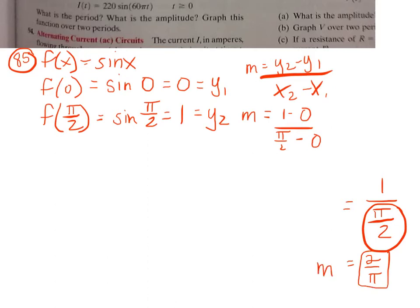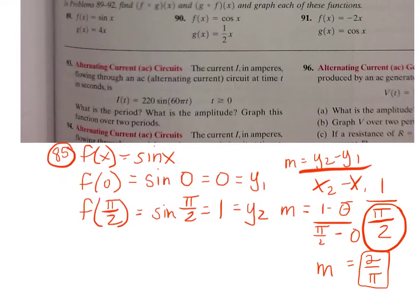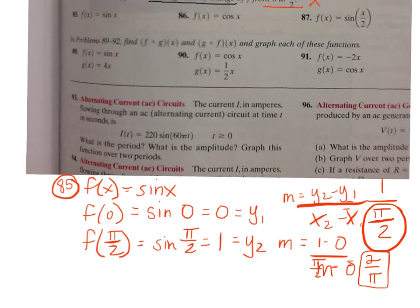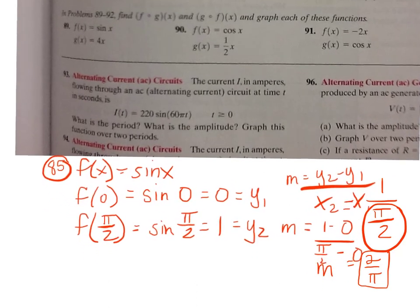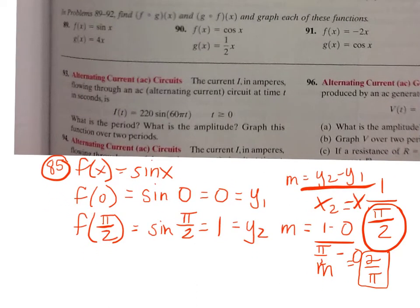That's number 85 — you can try 87 on your own. Now let's look at the next chunk of questions. Problems 89 through 92 ask us to find f(g(x)) and g(f(x)), so we're doing composite functions. After finding the composite function, they also ask us to graph it.